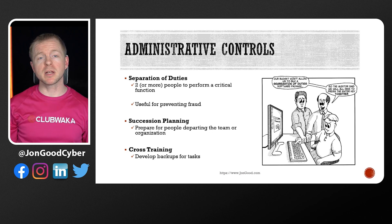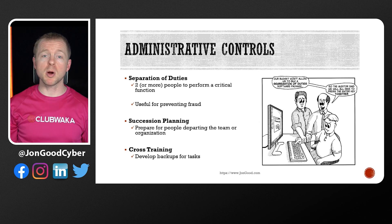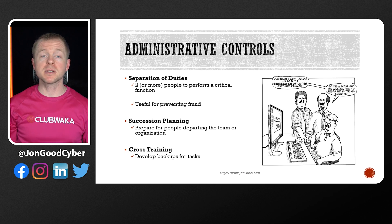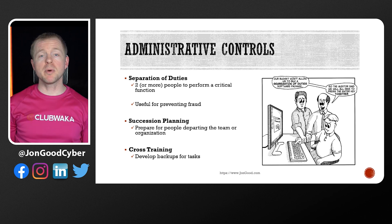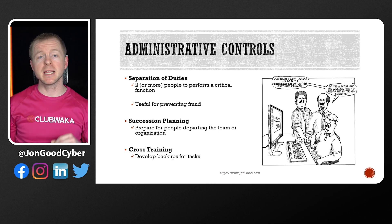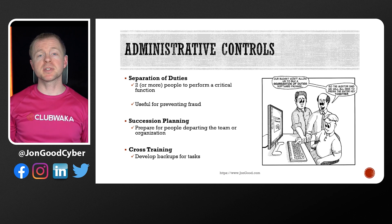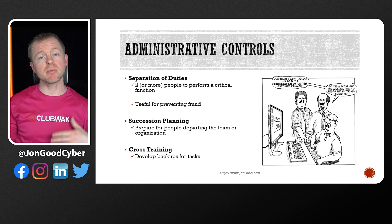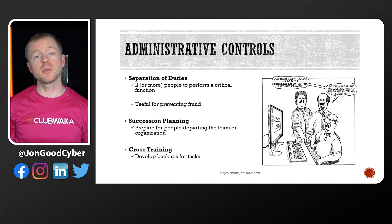Personnel security that you need to be aware of includes separation of duties, where no single person can carry out multiple parts of a critical task. Separation of duties is great at preventing fraud because multiple people will have to come together and collude in order to do something malicious. A great example would be the person configuring systems and the person auditing being two different people. Succession planning allows us to be ready for somebody who might leave our organization. Cross-training is where you have people learn secondary roles so that at a moment's notice they can step in — it's also valuable for when employees are sick, not just when they leave.